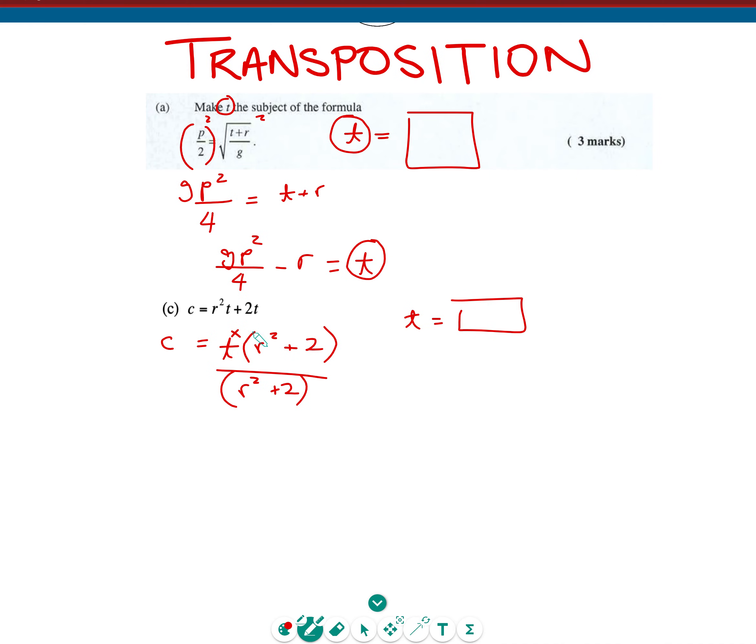It's T multiplied by all of that, so we can divide by R squared plus 2 on both sides. What that means is these will cancel, leaving C over R squared plus 2 is equal to T, and that is your answer.